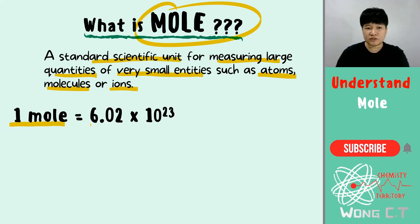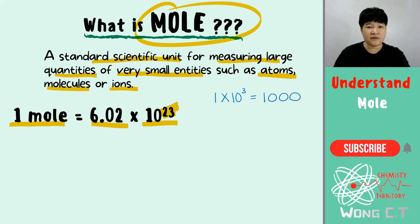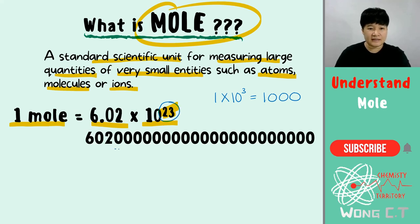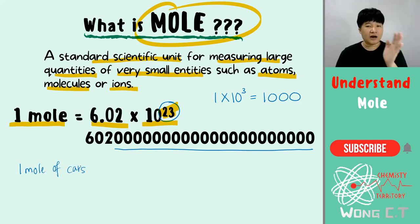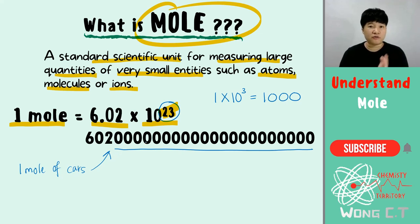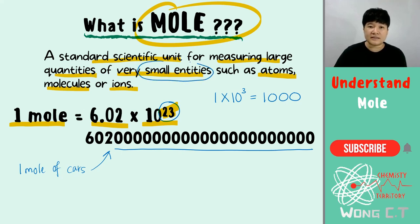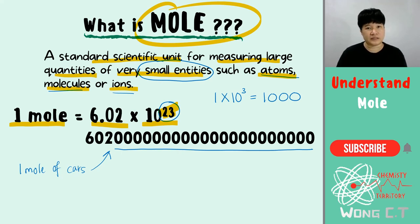One mole is actually equals to 6.02 times 10 to the power of 23. We know that 1 times 10 to the power of 3 equals to 1000, so imagine 10 to the power of 23 — that many zeros at the back. For example, if I have 1 mole of cars, I mean I have 6.02 times 10 to the power of 23 cars — that is a lot of cars! So that is how much 1 mole is. We need such a big amount because it's used to calculate small entities like atoms, molecules, and ions.